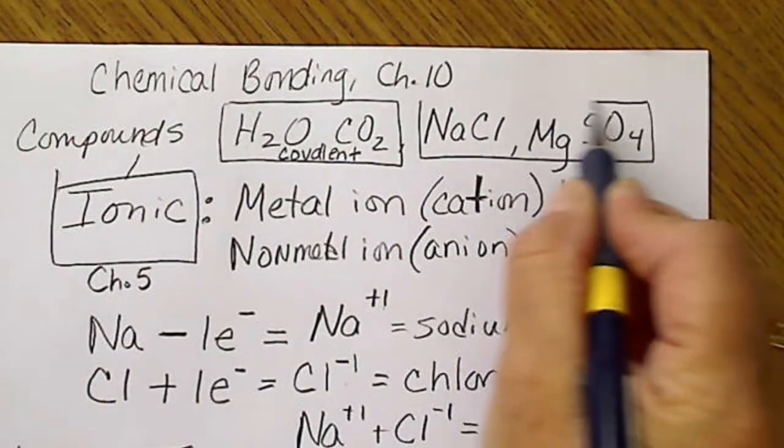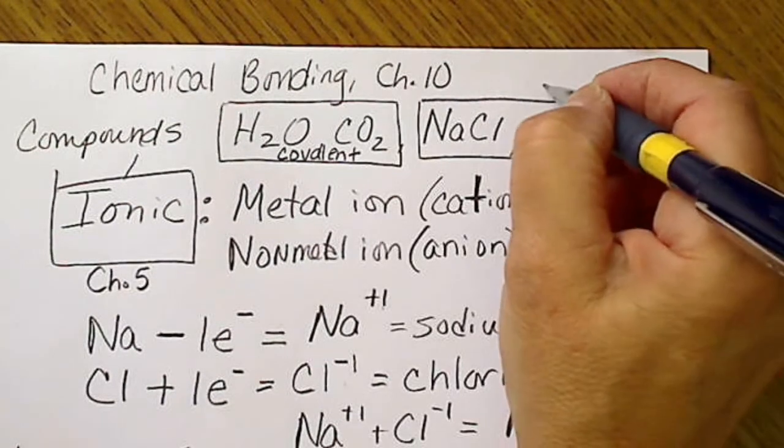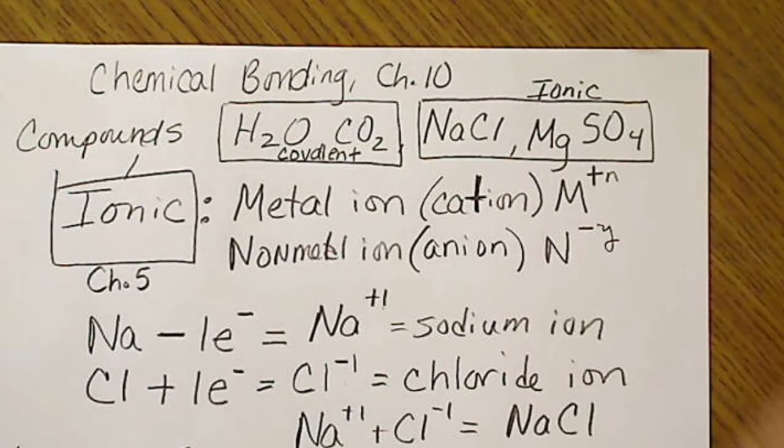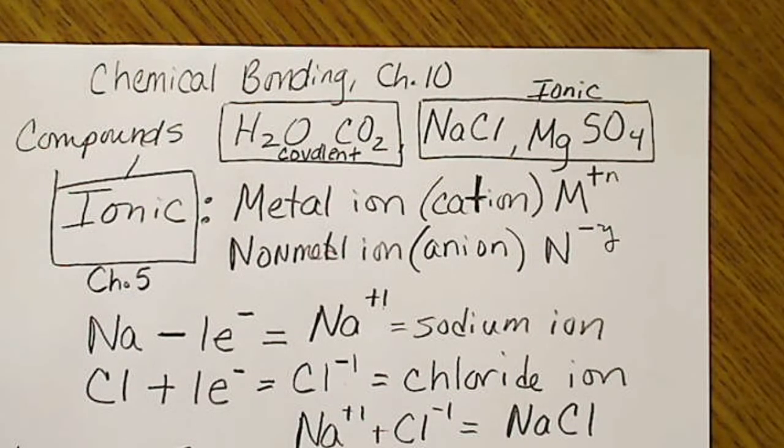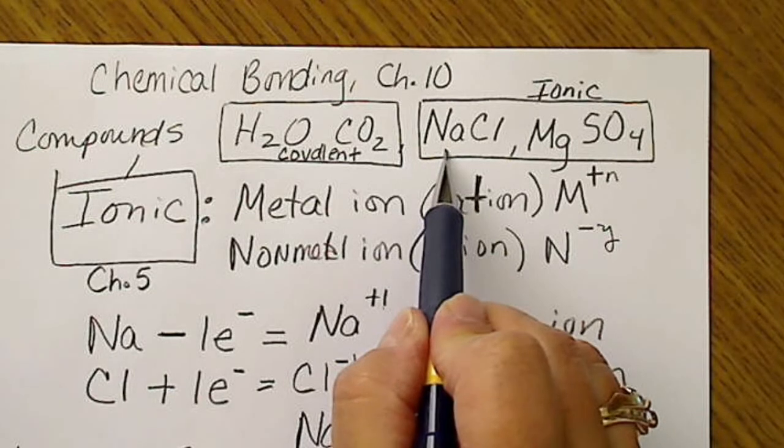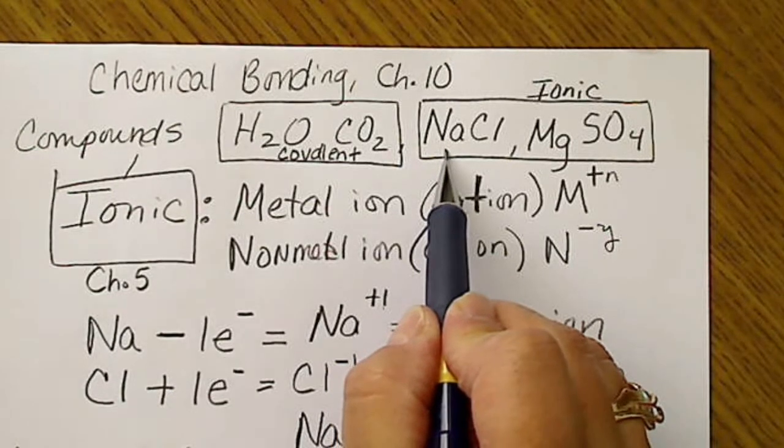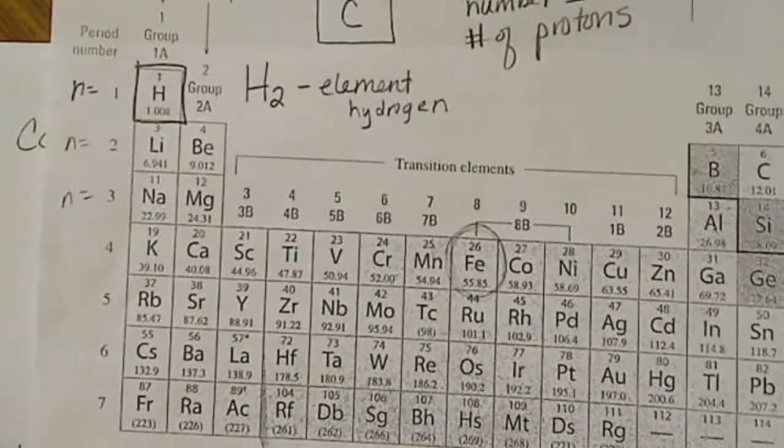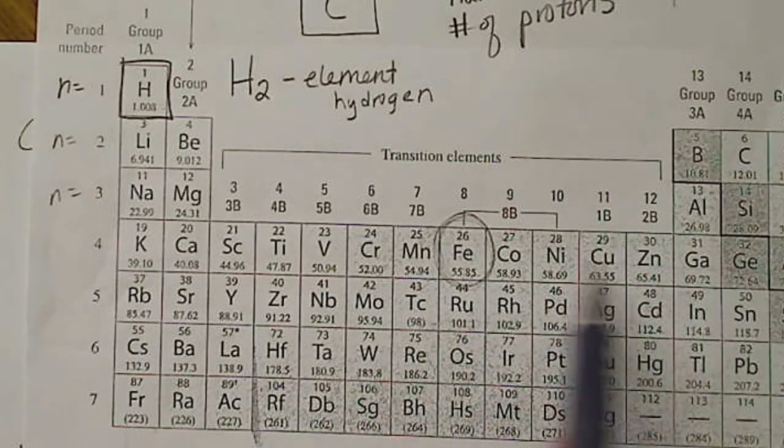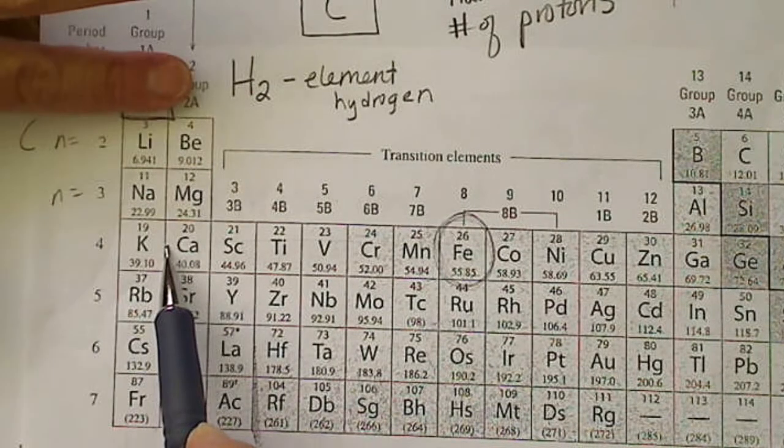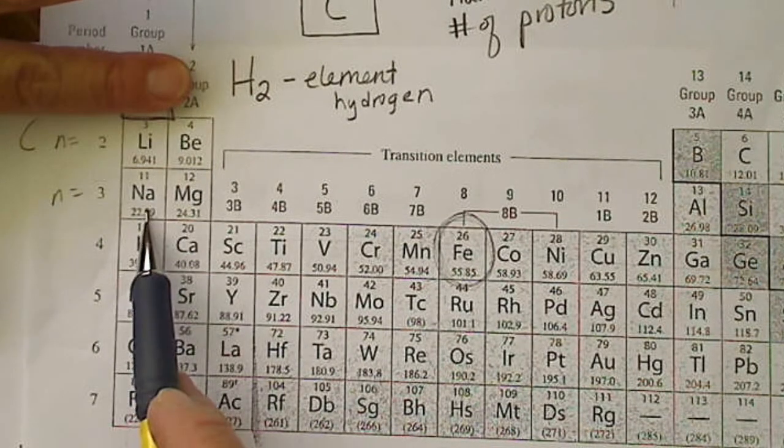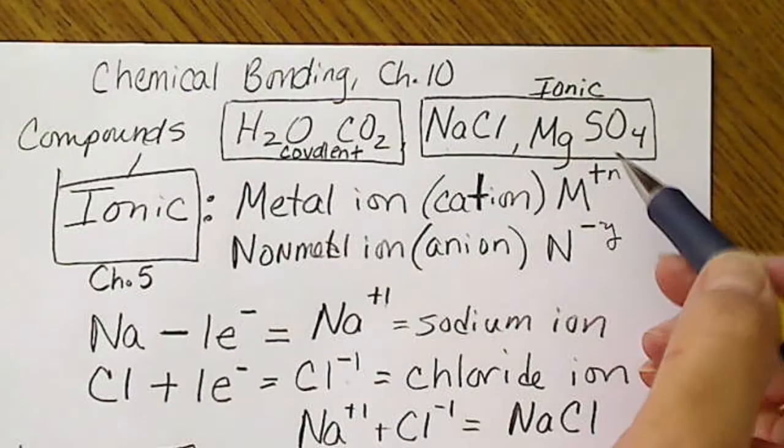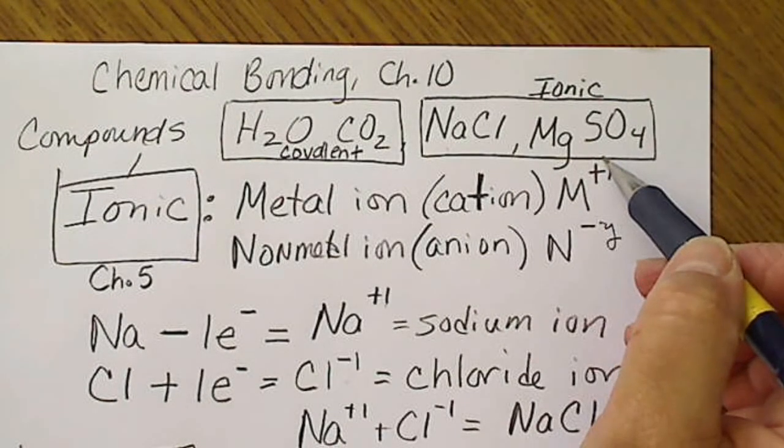These two compounds would be ionic. And the quickest way to tell by looking at a formula is if the first atom written is a metal. Sodium is on the left-hand side of the periodic table. So everything to the left of this bold stair step except hydrogen is a metal. So magnesium is right here, so magnesium sulfate would also be an ionic compound.